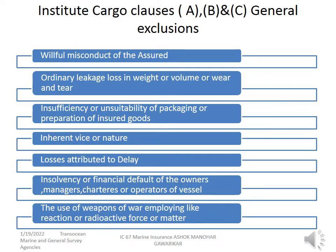Whether it is an A, B, or C policy, these exclusions are general in all three policies. Foremost is willful misconduct of the assured — it is a deliberate action of the assured leading to loss, a conscious decision of the assured leading to loss. It is deliberate action such as overloading of a truck, or selecting an improper vehicle, etc.